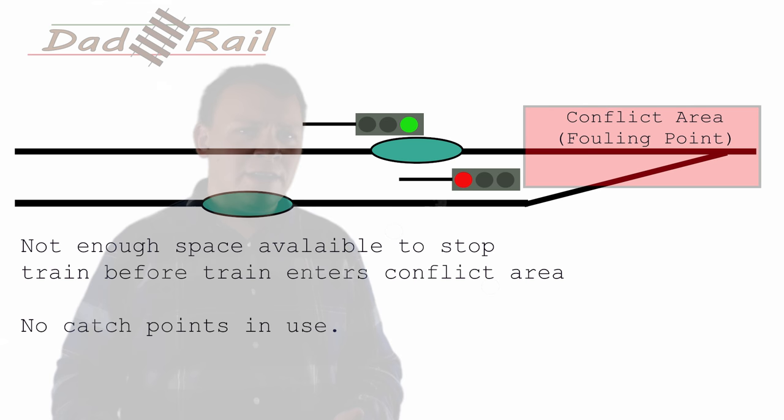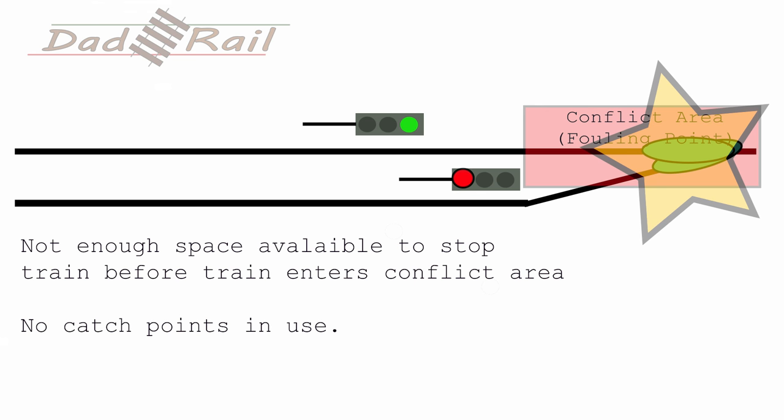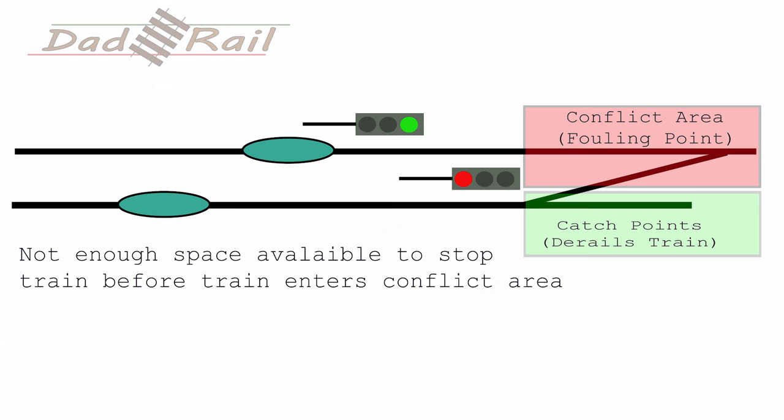One of the common reasons for using catchpoints and derailers is that there's not enough space available to safely stop a train, should it pass the red signal. For example, a train passes a red signal, the emergency brakes are applied, but the time it takes to stop the train, there isn't sufficient space to stop it before it reaches the conflict zone. Therefore, the train is derailed, which prevents the train moving into the path of an oncoming vehicle.